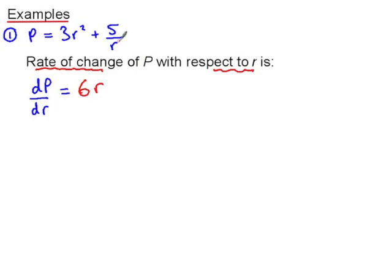Now remember, 5 over R is 5R to the negative 1. So take 5R to the negative 2, which we can rewrite as 6R, take 5 over R squared.